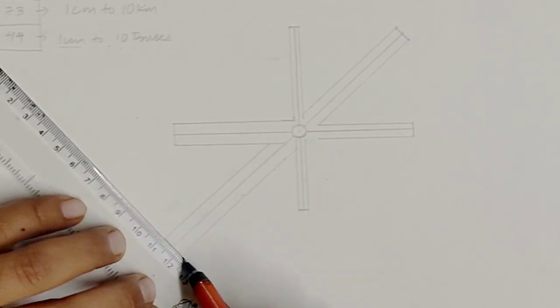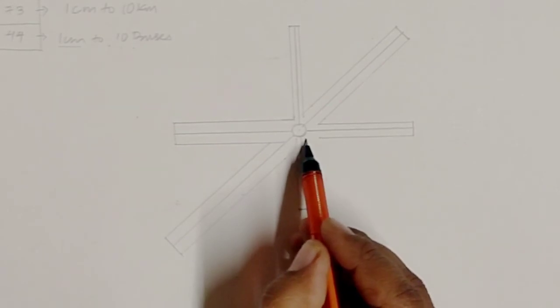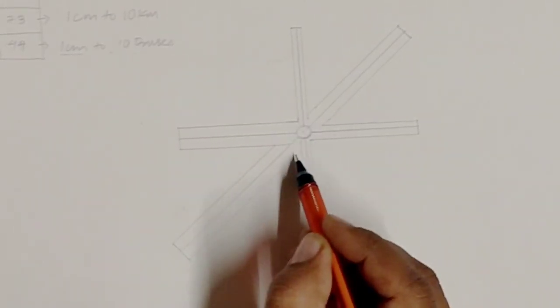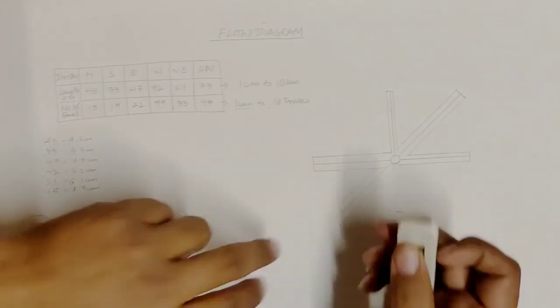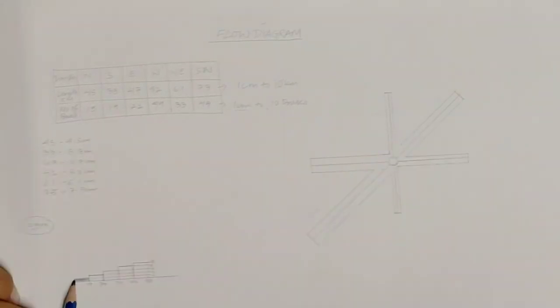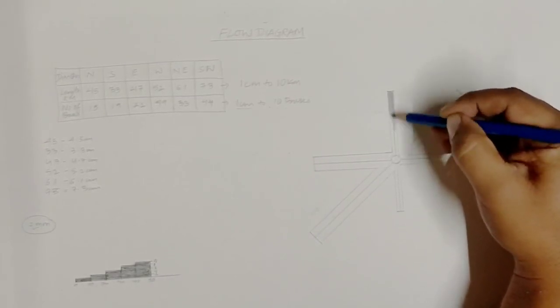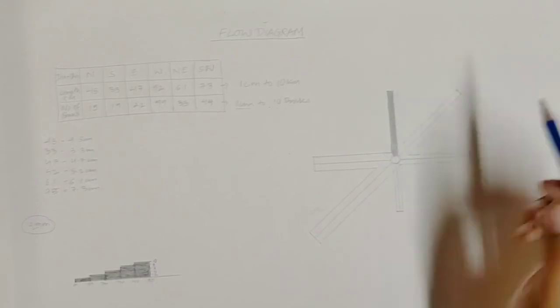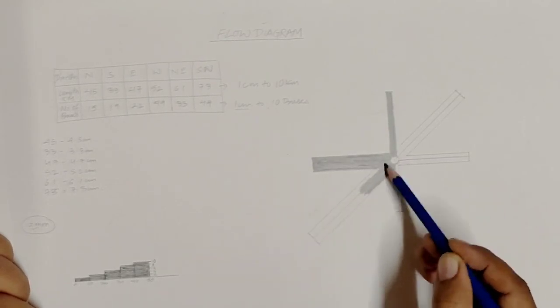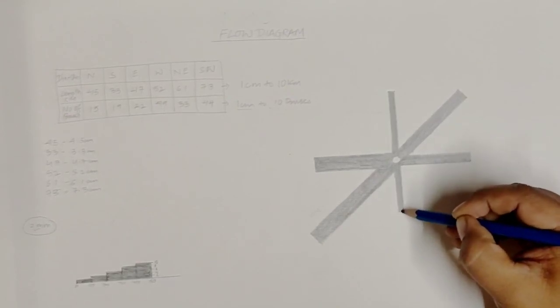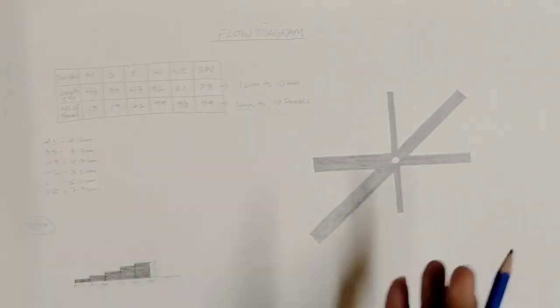Towards the Southwest there are 44 buses, also between 40 to 50, so the width is 10 millimeters total — 5 millimeters on each side — then join it with a line. Any extra lines can be erased afterwards, or we can shade the diagram. This is how we complete the flow diagram. I hope this video was helpful — please comment and subscribe to see further videos on different geography topics.